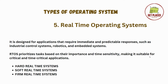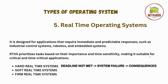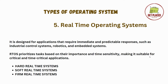The first one is hard real-time systems. In hard real-time systems, if the deadline is not met, then there will be a system failure, and if there is a system failure, there is a lot of consequence. For example, airbag deployment in a car must deploy within a very specific time frame to save lives. So if the deadline is not met, there will be a huge consequence.